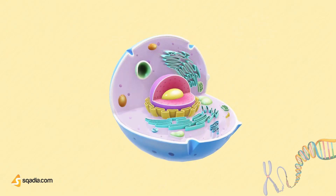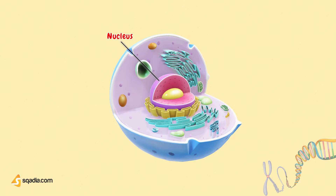Let's start with a cell. This is how a typical animal cell looks like. Among the various organelles, you can find the nucleus right here. The nucleus is an important organelle in a eukaryotic cell that contains all the genetic information in the form of DNA, or deoxyribonucleic acid. As a genetic material, DNA provides a blueprint that directs all cellular activities and specifies the developmental plan of multicellular organisms.